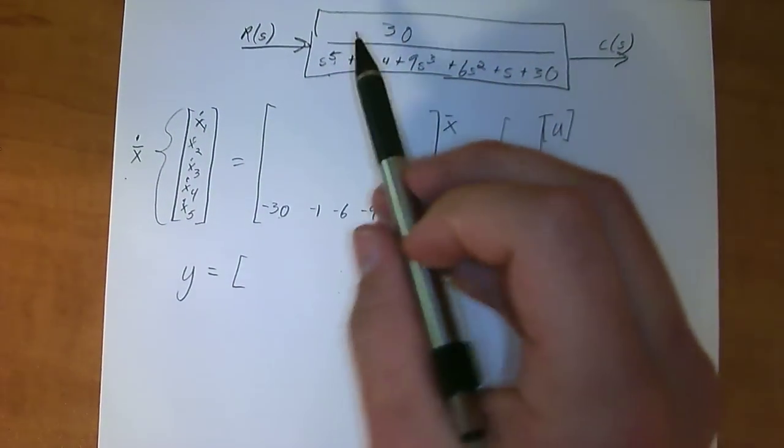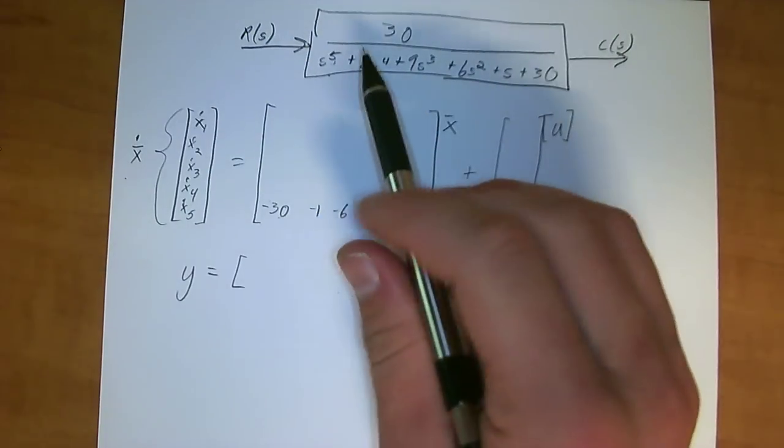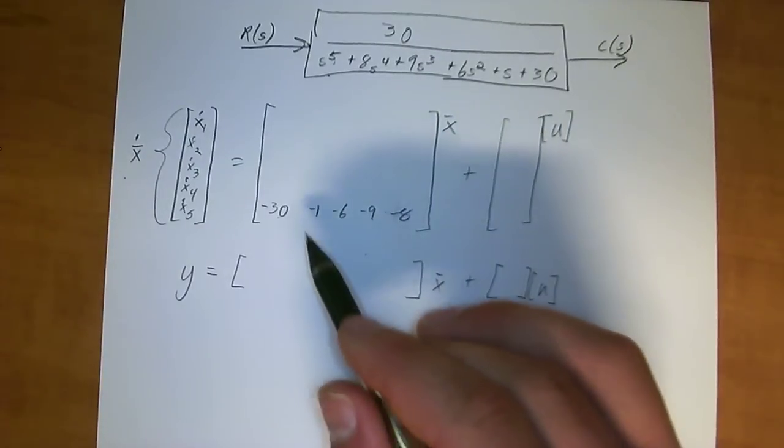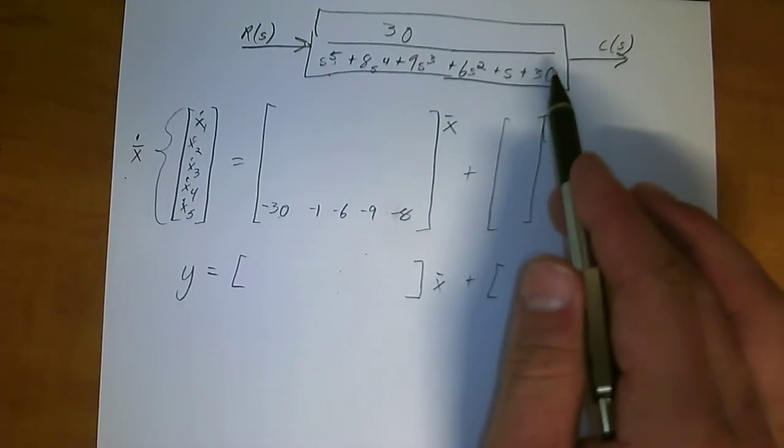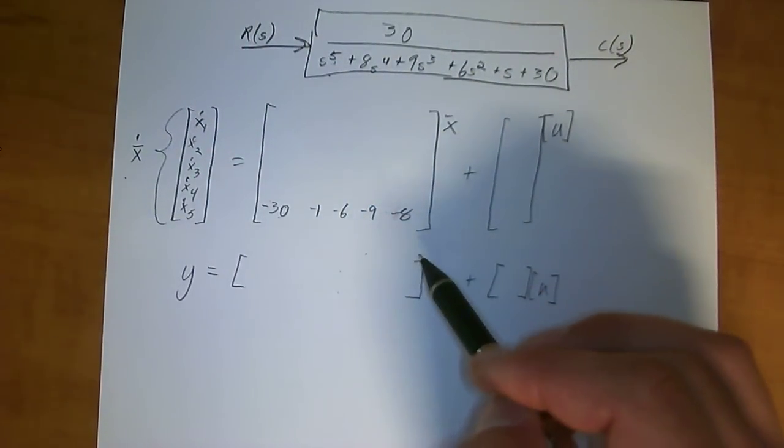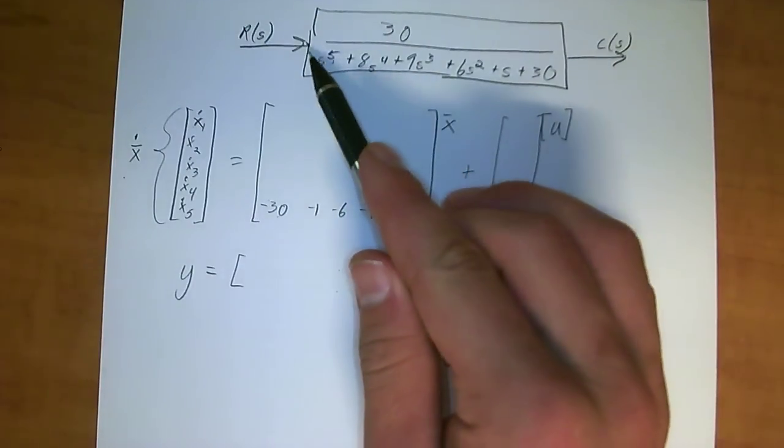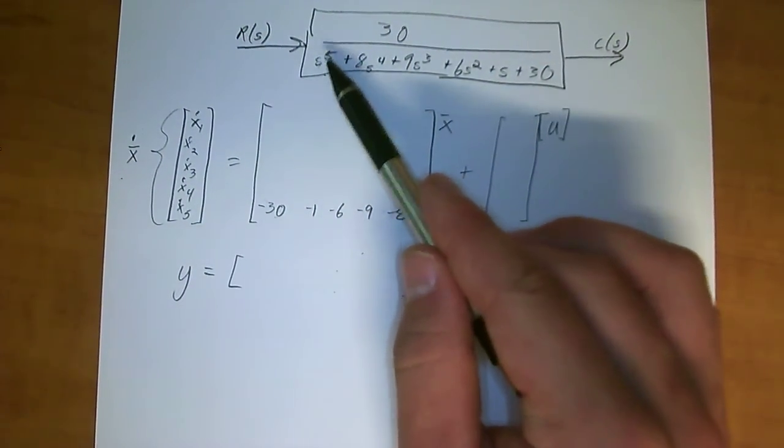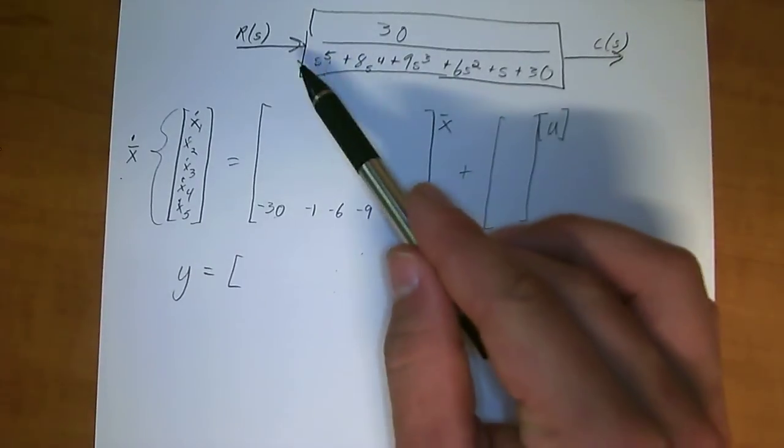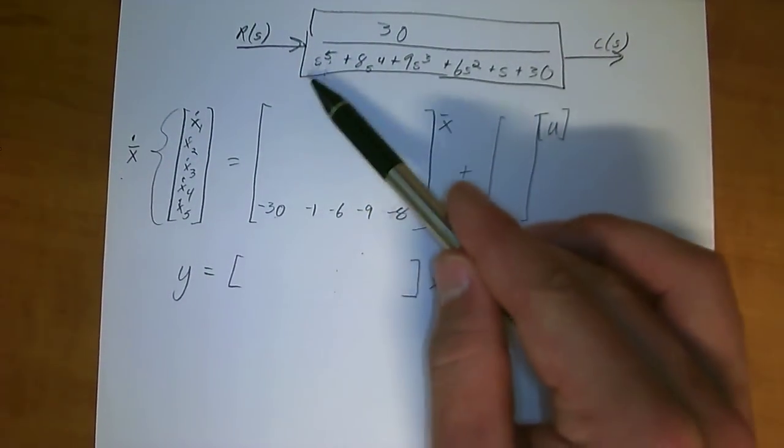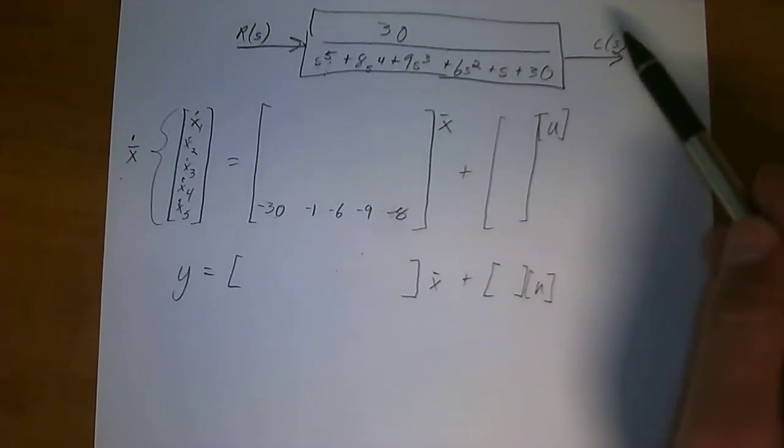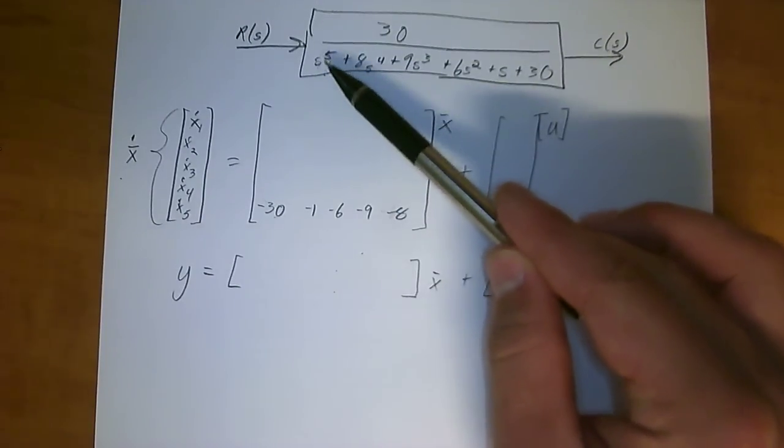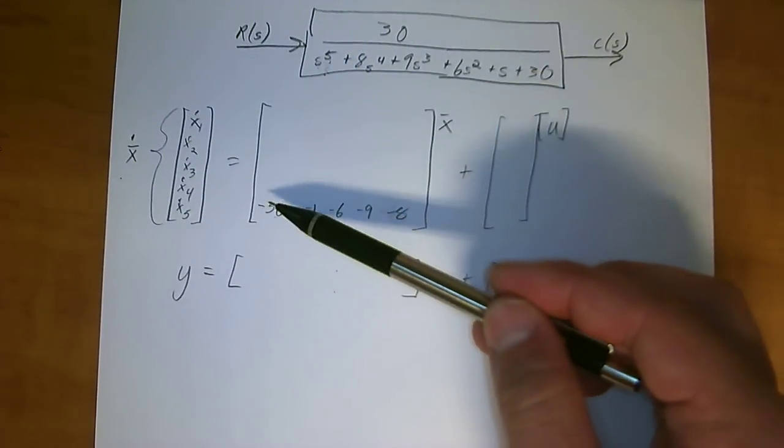The s to the 5th doesn't count. That goes in with the derivation of the transfer function. If you're going to use the shortcut method of just taking the reverse order and negating the bottom row, this has to be in proper form. There cannot be a number in front of the highest power of s. If there is, you have to divide it through all the way by the numerator and everything else to get this by itself.